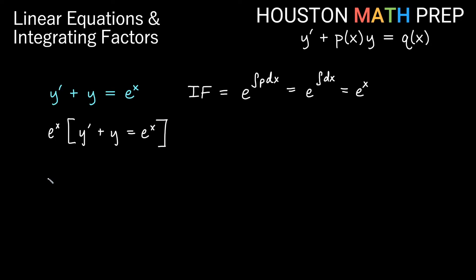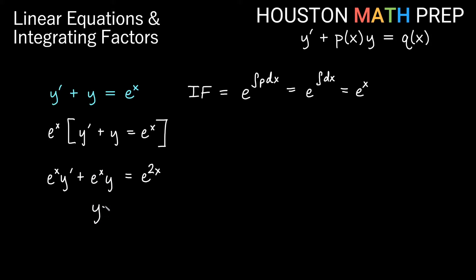After multiplying by e^x, distributing on the left hand side gives e^x·y' plus e^x·y, and on the right side e^x times e^x gives e^(2x). We can see the product rule: this is e^x times the derivative of y, and y times the derivative of e^x — since the derivative of e^x is itself. So the left side is the product rule for e^x times y. Now we take the antiderivative of both sides.